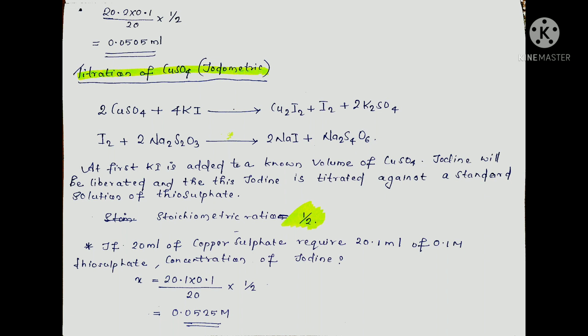The next titration is CuSO4 iodometric titration. It is called iodometric titration because it involves iodine liberated by a chemical reaction. First, KI is added to a known volume of CuSO4. Iodine is liberated, and this iodine is titrated against the standard solution of thiosulfate.